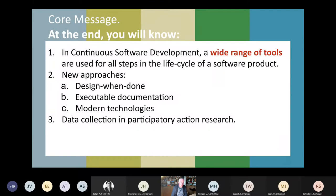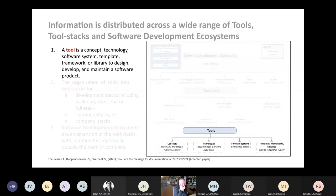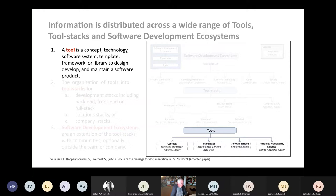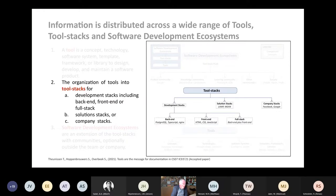There is a wide range of tools. What you see are not just software systems — the tools I mentioned — but also technologies such as Thoughtworks' Tech Radar or Gartner's Hypercycle. And concepts include processes, knowledge, artifacts, society, templates, frameworks, and libraries — for instance, Django, Angular, or jQuery. These are specific tools used in context, and they can be organized into stacks. You may have seen full-stack development: development stacks covering back end, front end, and full stack combining both.